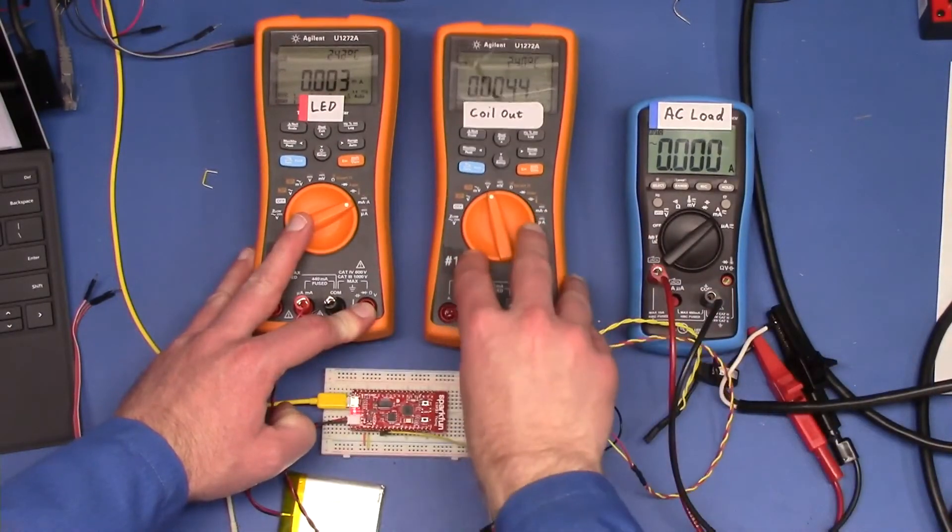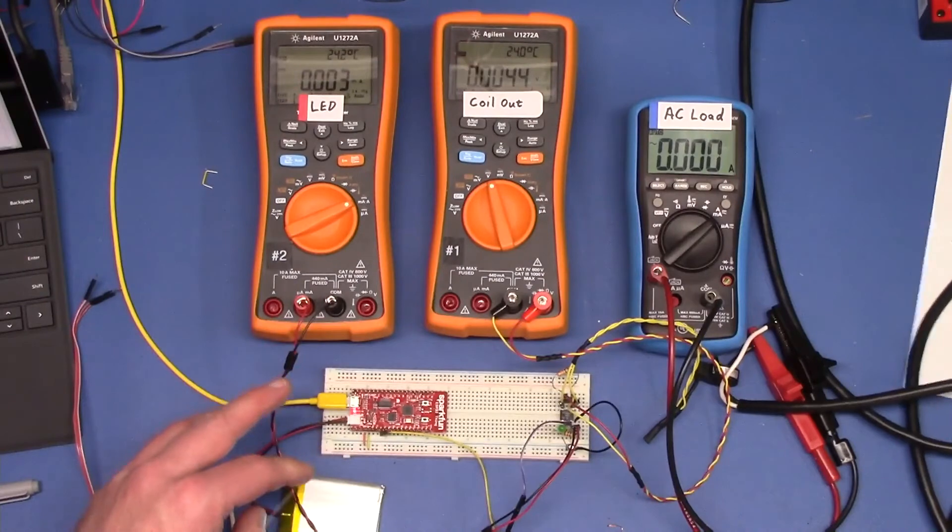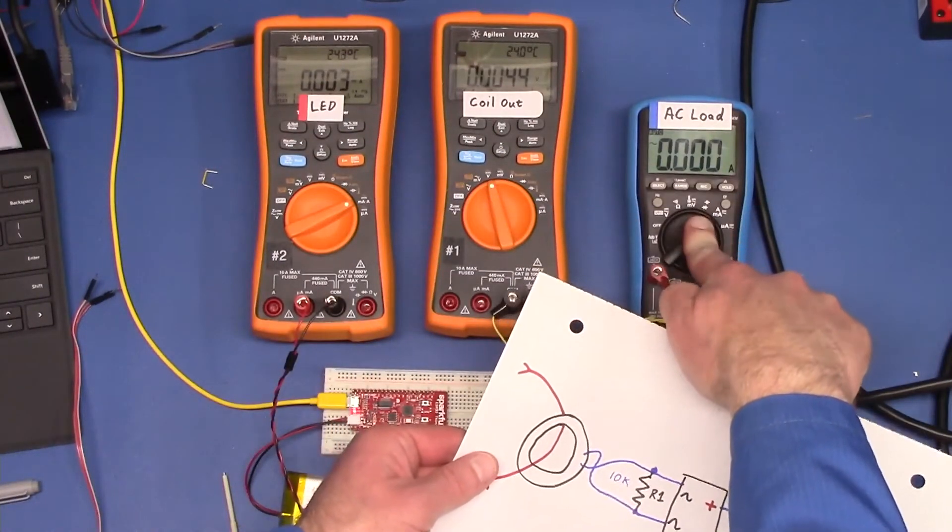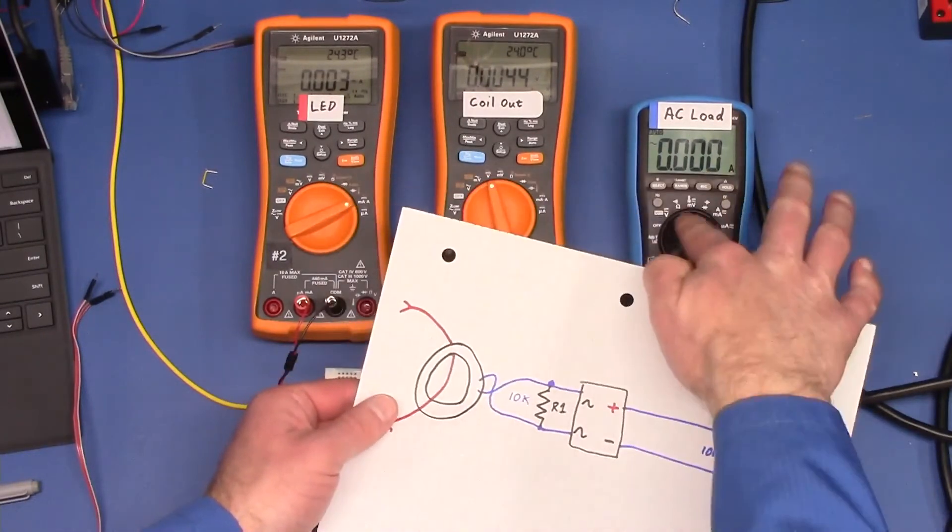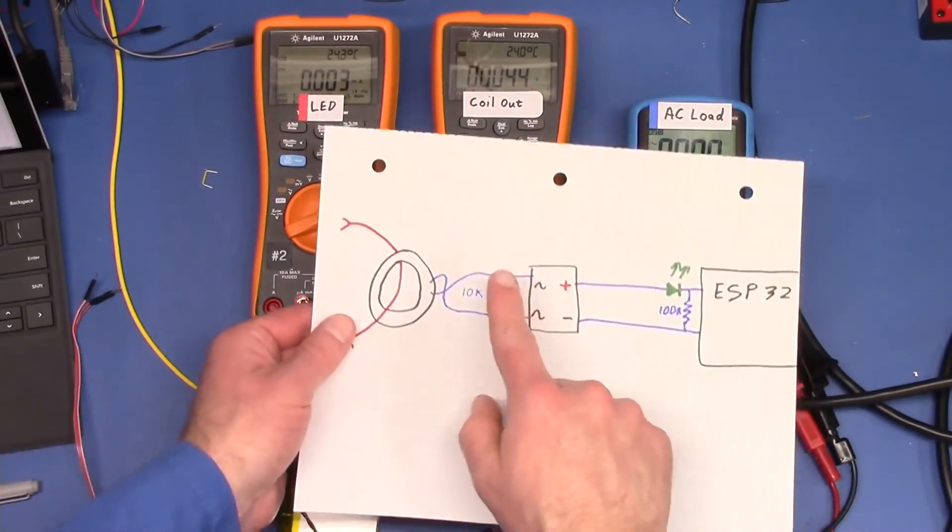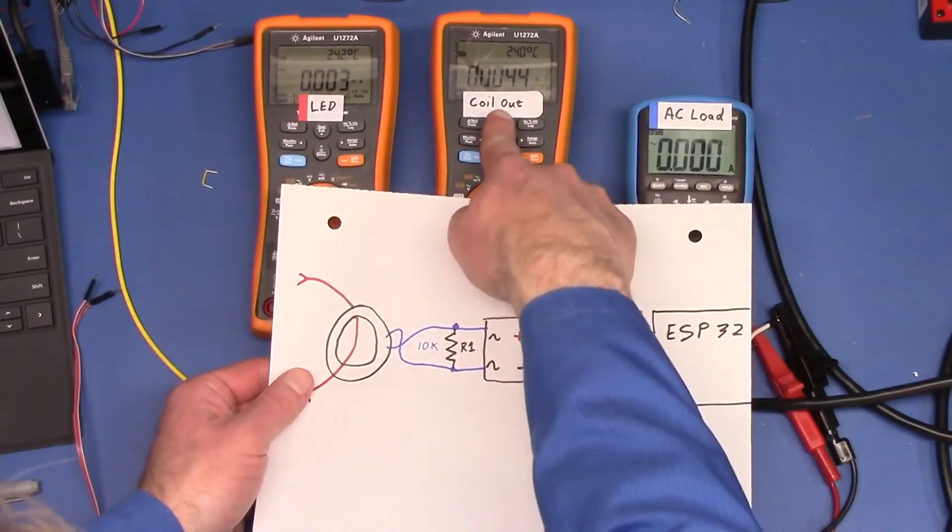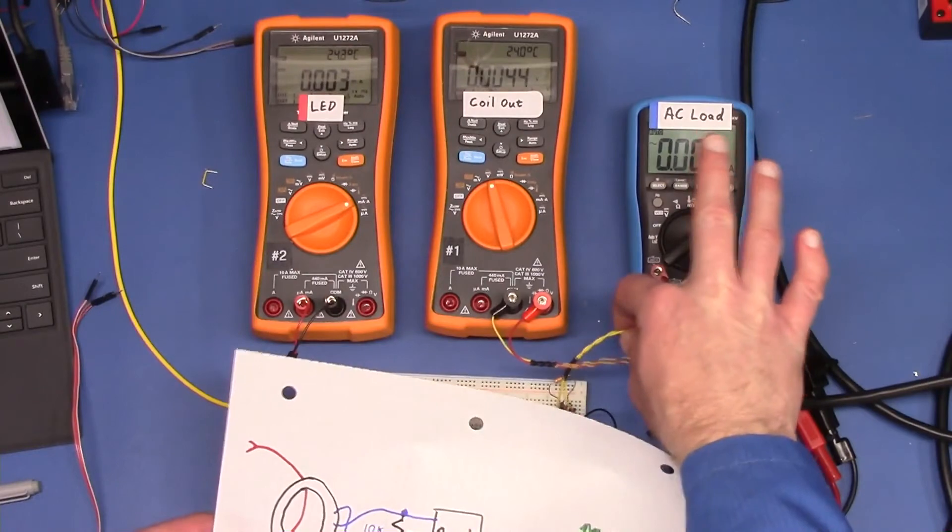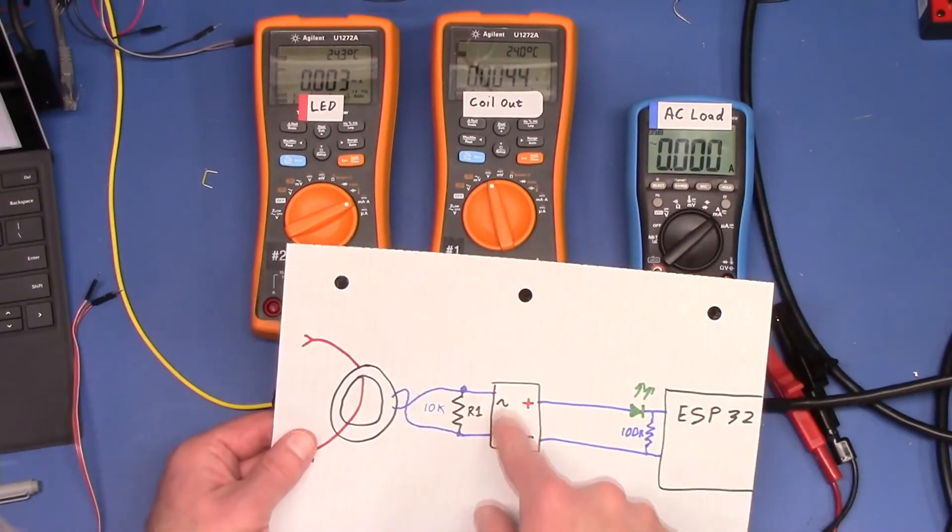Now we're going to also monitor a couple of things. We're going to monitor this current using the blue meter here, and that'll be an AC amps RMS. Then here we're going to monitor the coil output voltage from these two little yellow wires here coming off the current transformer.